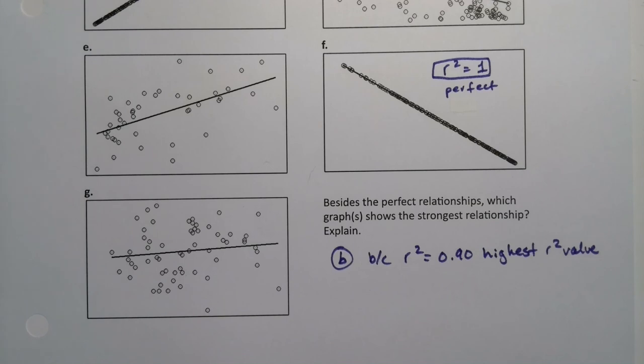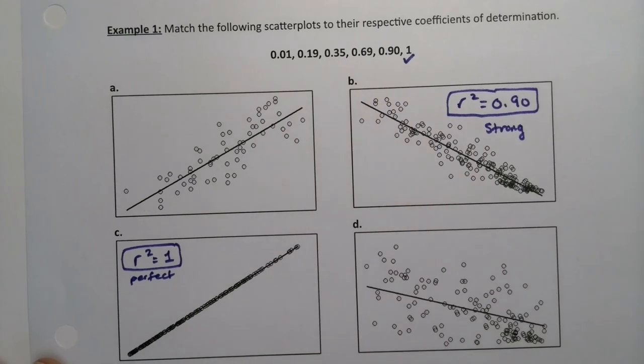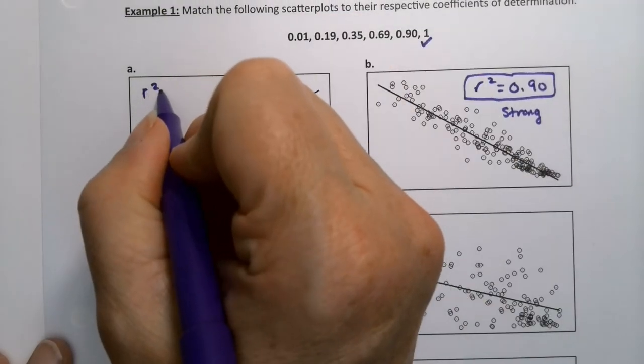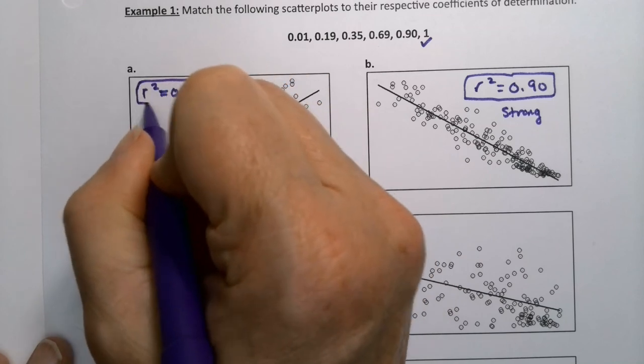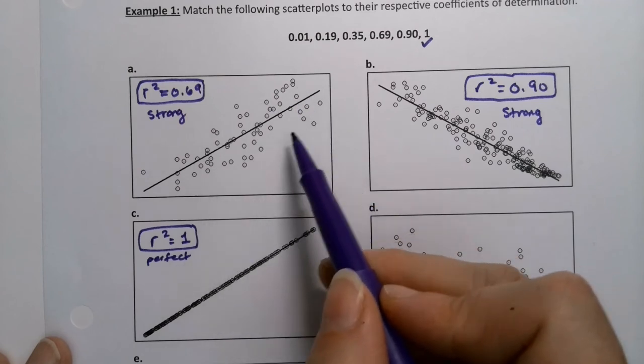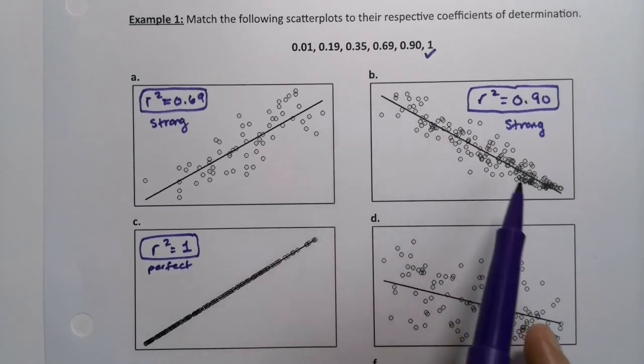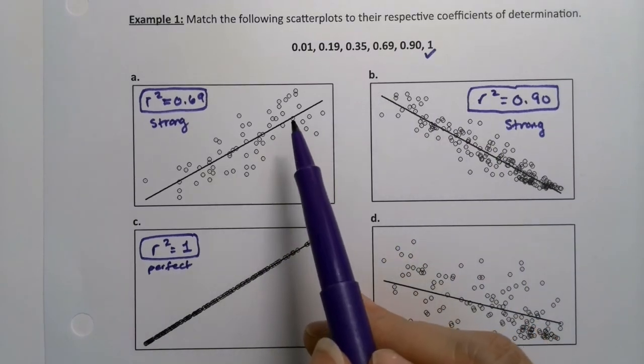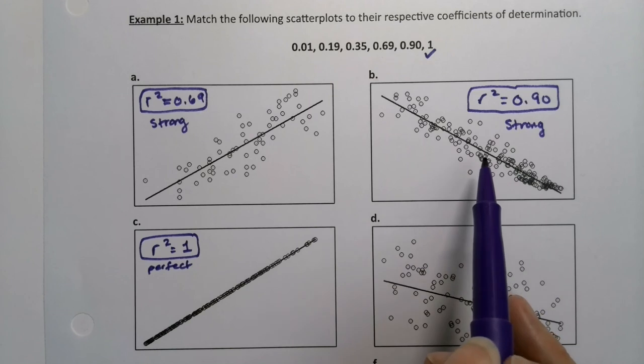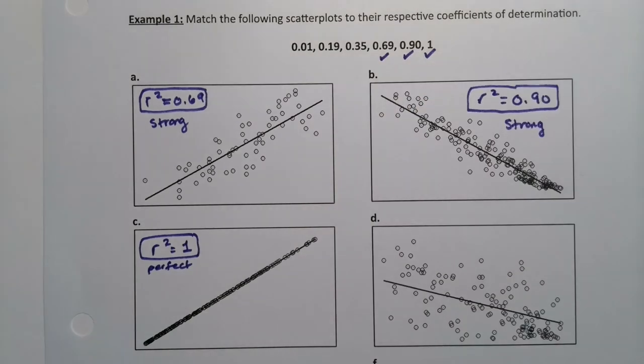Alright, now what about the next number down, 0.69? So you would look at which is the next strongest relationship, which, for my money, is letter A. It's this one. It's the next strongest one. And that's also a strong relationship. You can see the points are pretty closely tied around that line, but not as closely as this. Now notice, this is a negative relationship. This is a positive relationship. R squared doesn't care. All R squared cares about is the strength of that relationship. How tightly packed around the line the points are. That's what R squared measures. It's not going to tell you positive or negative because it doesn't make any difference. R squared is always positive.